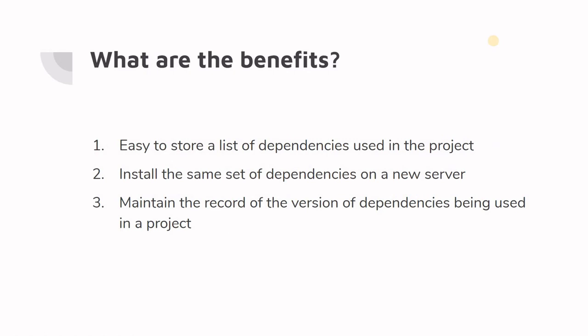Now let's look at the benefits of using a requirements.txt file. The most important benefit is that it's easy to store a list of dependencies used in your Python project. Without it, there's no clean way to save the dependencies needed to run your project. You'd have to constantly run pip list and it becomes a real mess. This is a really important feature — having a documented list of dependencies required to run a project on your system or any server.